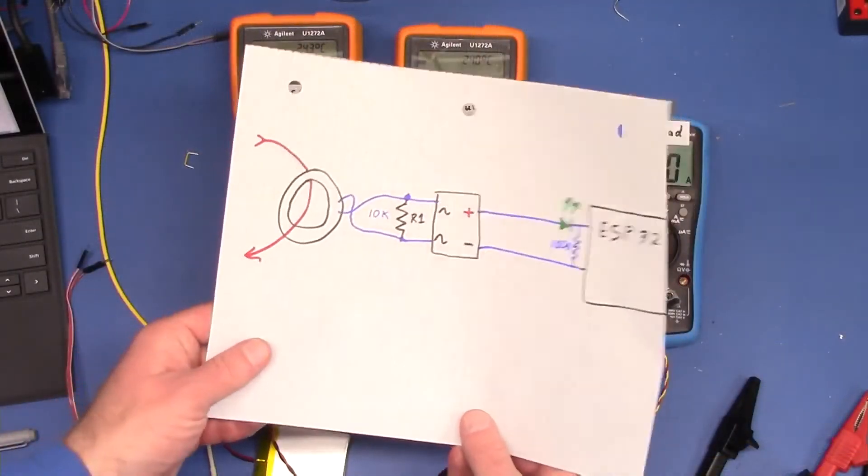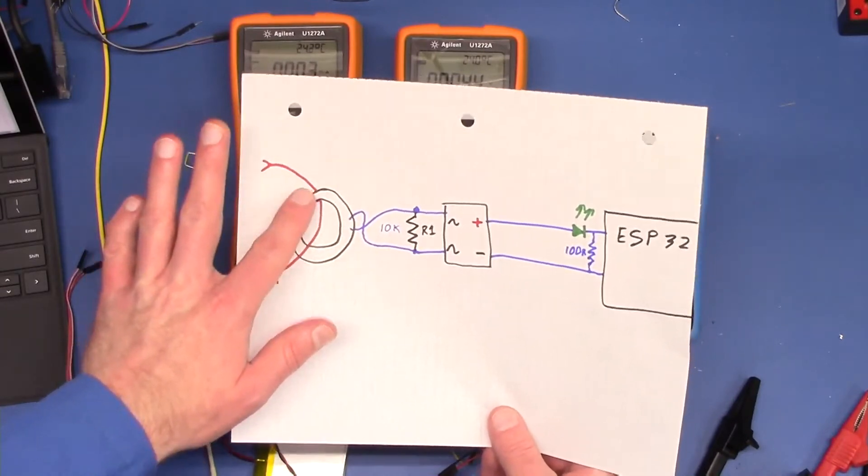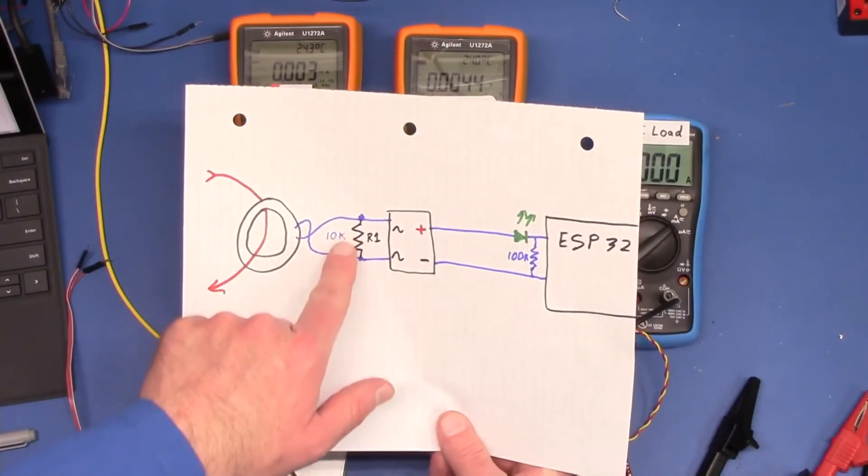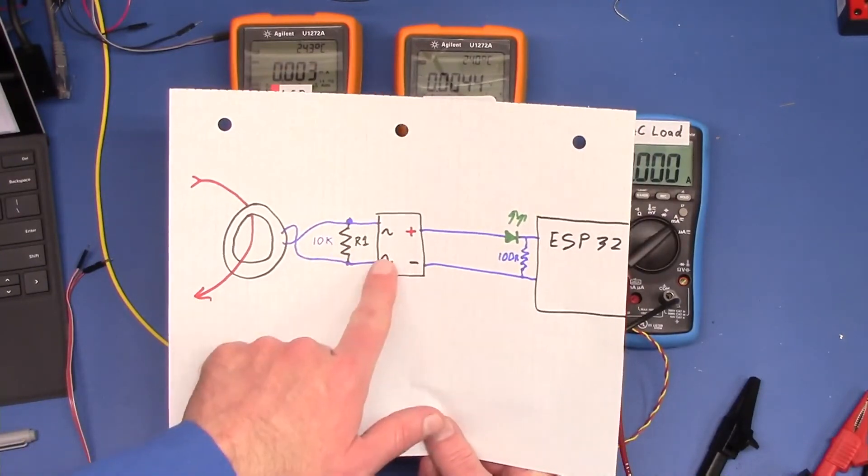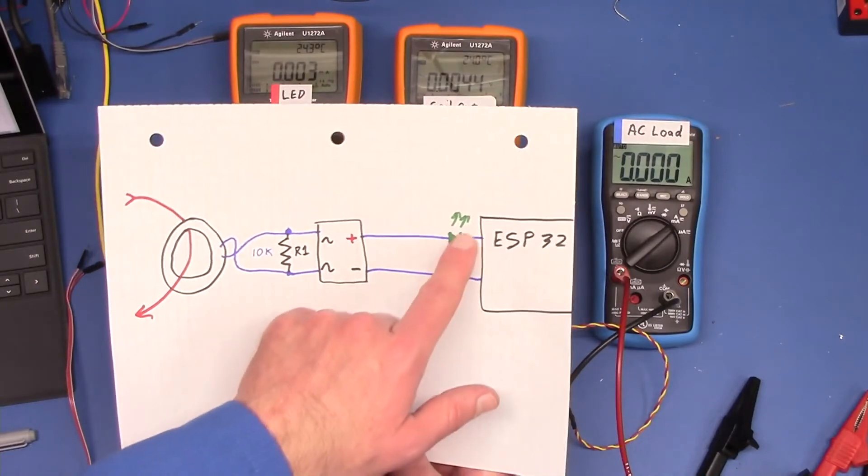So here's the circuit we're going to follow. Here's our Rogowski or our current transformer and our power line for our pump resistor for maintaining a load. We're going to rectify this to DC and then run it through an LED.